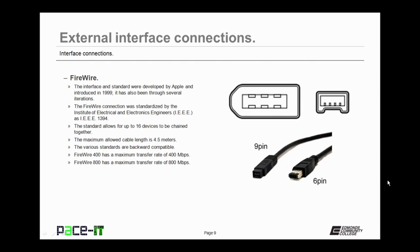Now let's move on to FireWire. This interface and standard were developed by Apple and introduced in 1999, and it has been through several iterations. FireWire was standardized by the Institute of Electrical and Electronics Engineers — the IEEE — as the IEEE 1394 standard. It allows for up to 16 devices to be chained together, with a maximum cable length of 4.5 meters. All IEEE 1394 standards are backwards compatible. There are two main standards: FireWire 400 at 400 megabits per second, and FireWire 800 at 800 megabits per second.